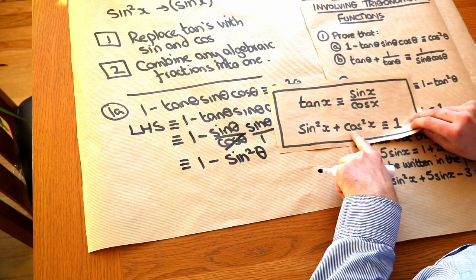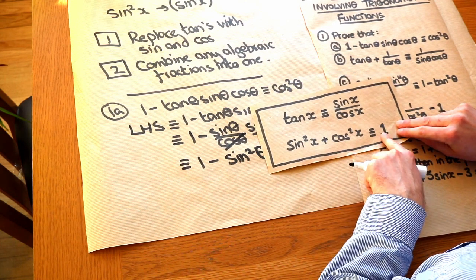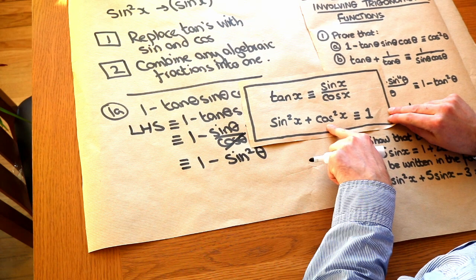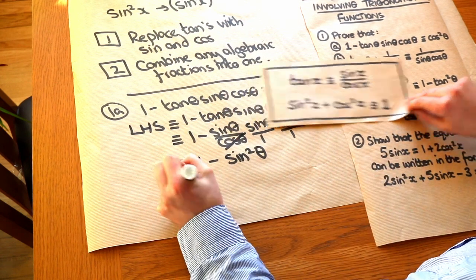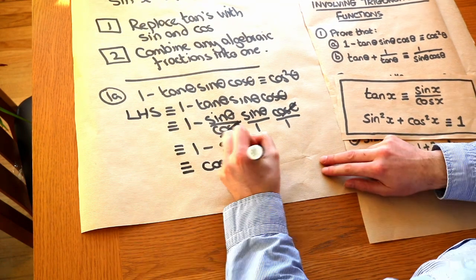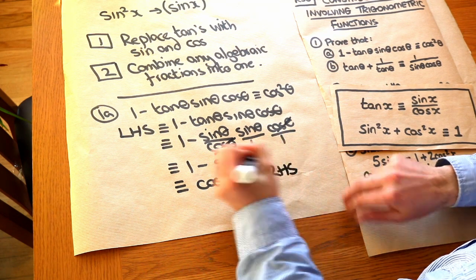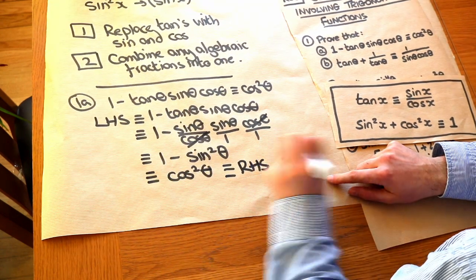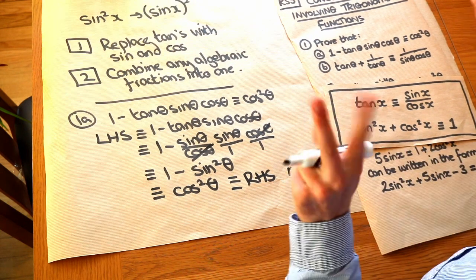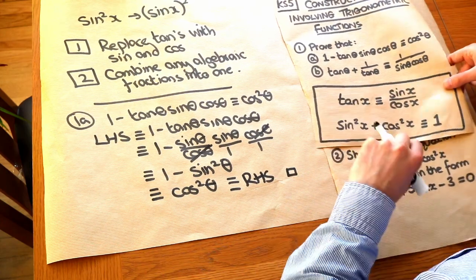Now if we look at the second identity, we can see that sine squared theta plus cos squared theta equals 1. Therefore 1 minus sine squared theta must be equal to cos squared theta. So that gives us just cos squared theta, which is equal to the right-hand side. We are therefore done — I like to put a little square to indicate the proof is completed, which is the mathematical notation for QED.